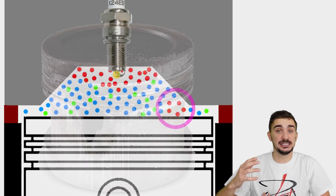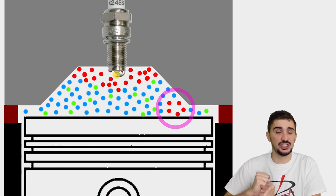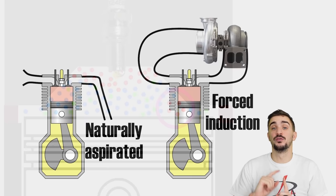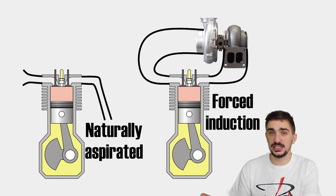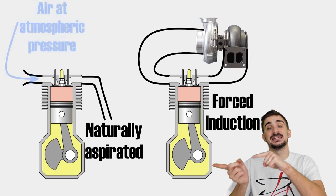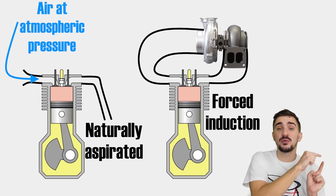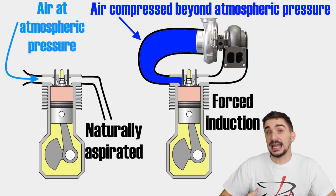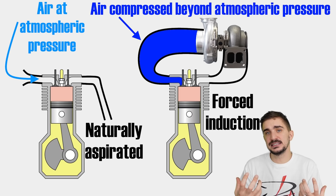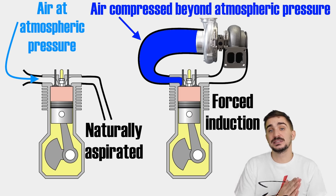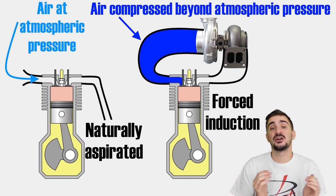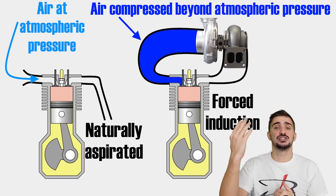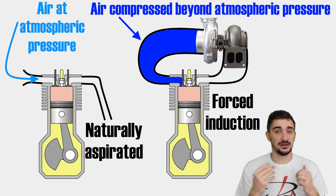A higher compression ratio obviously increases the chances for knock. This is especially true for forced induction engines, which are sending already compressed air into the cylinder, inevitably adding heat into the system, which means that forced induction engines are even more limited in the compression ratio they can run.